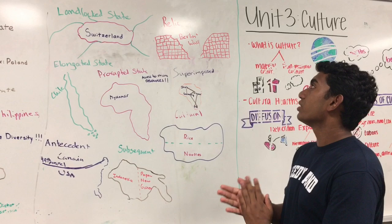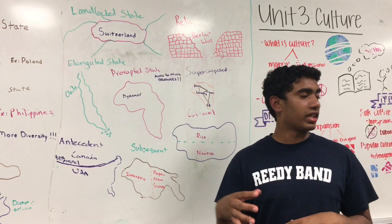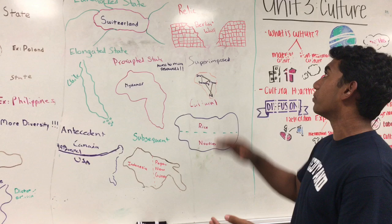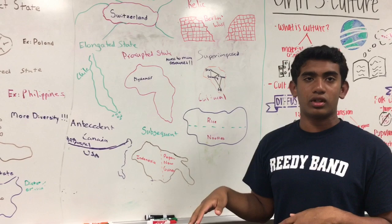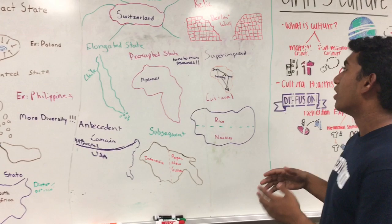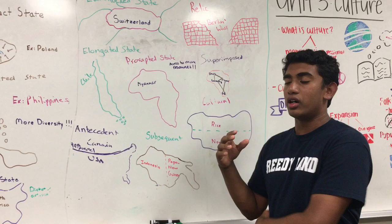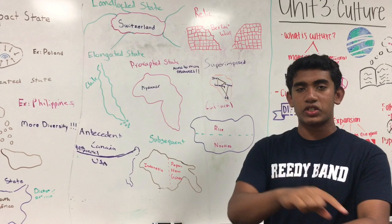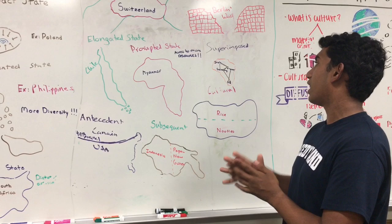The next boundary is a relic boundary — a relic boundary is basically a boundary that's not actually there anymore, but it seems like it is because of the influences the boundary had when it was in place. The biggest example would be the Berlin Wall, separating Western Europe and Eastern Europe, basically splitting communism and capitalism. The next boundary is superimposed. This was a huge part of colonization, where a lot of the European powers came to Africa, grabbed land, and just drew straight lines everywhere marking their territory. That was a huge part of shaping all the conflicts that Africa has today.